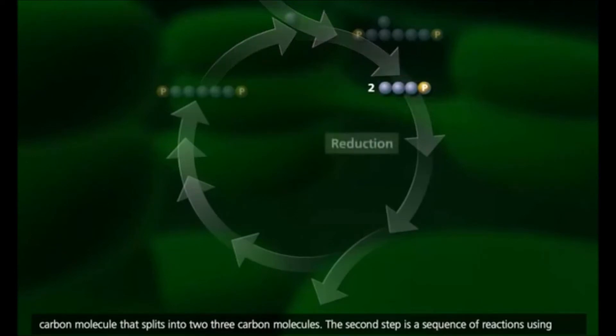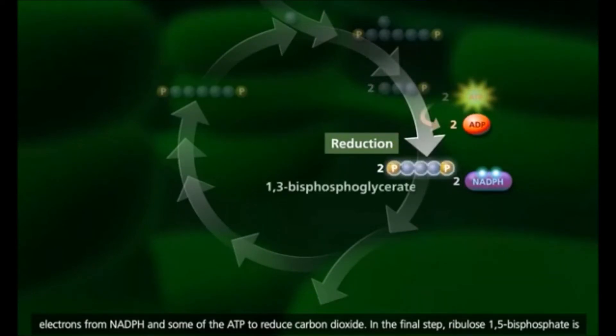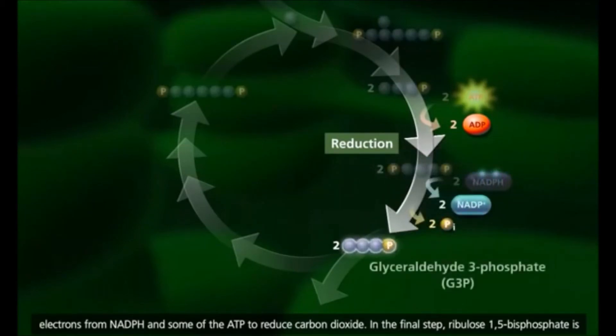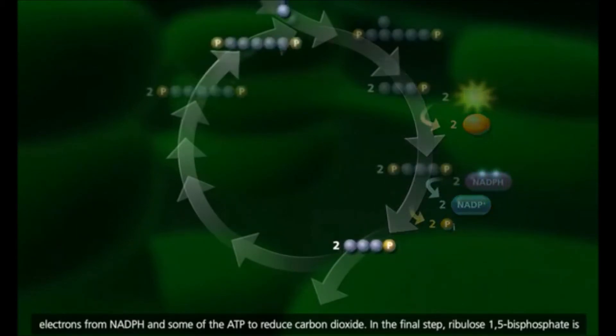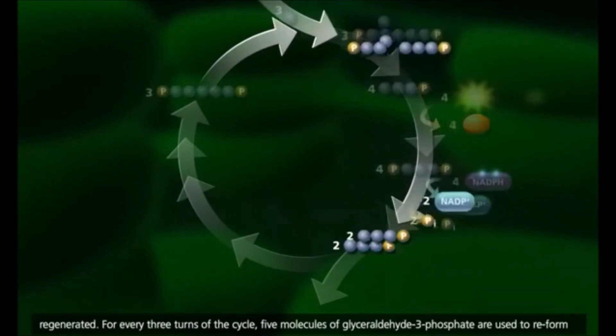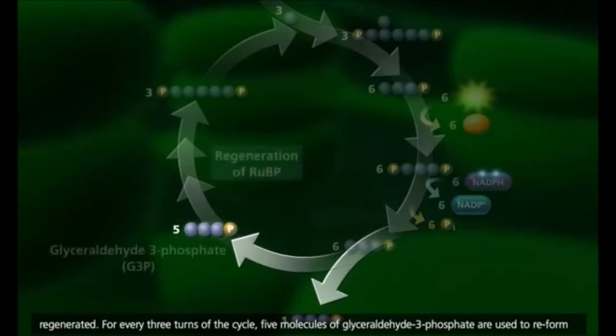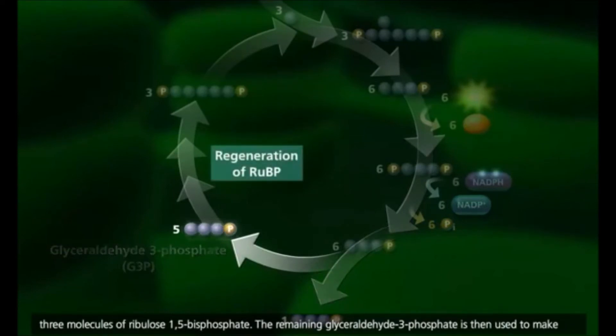The second step is a sequence of reactions using electrons from NADPH and some of the ATP to reduce carbon dioxide. In the final step, ribulose-1,5-bisphosphate is regenerated. For every three turns of the cycle, five molecules of glyceraldehyde-3-phosphate are used to reform three molecules of ribulose-1,5-bisphosphate.